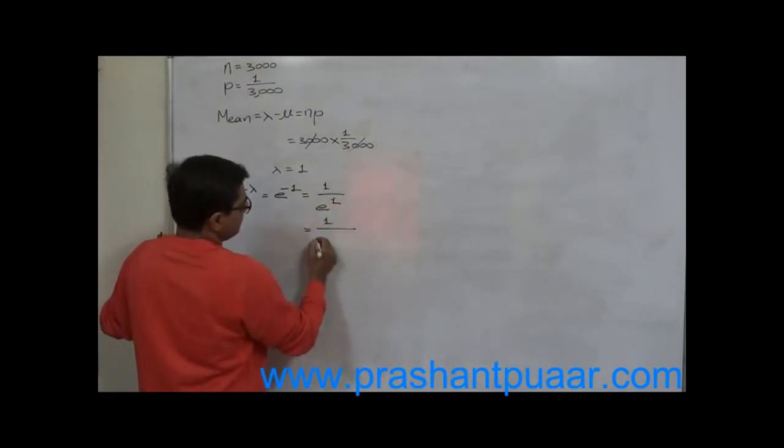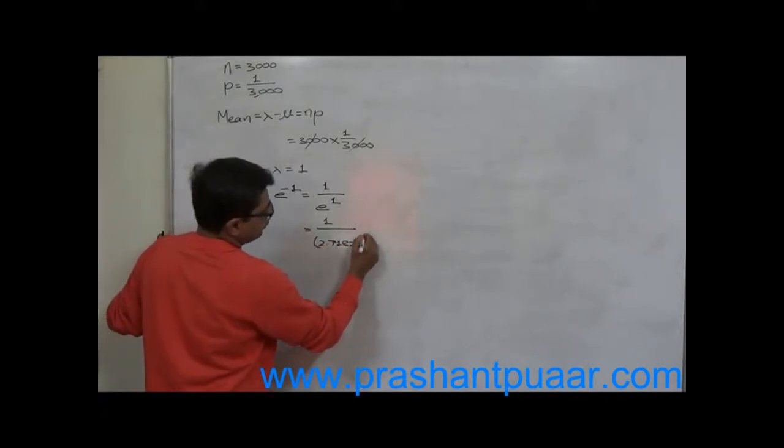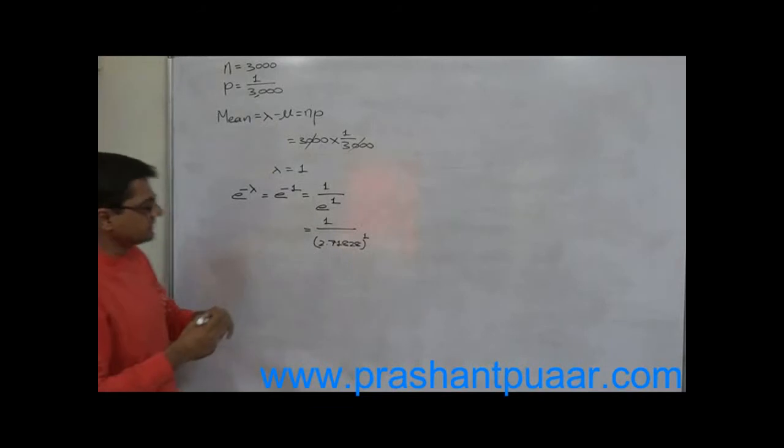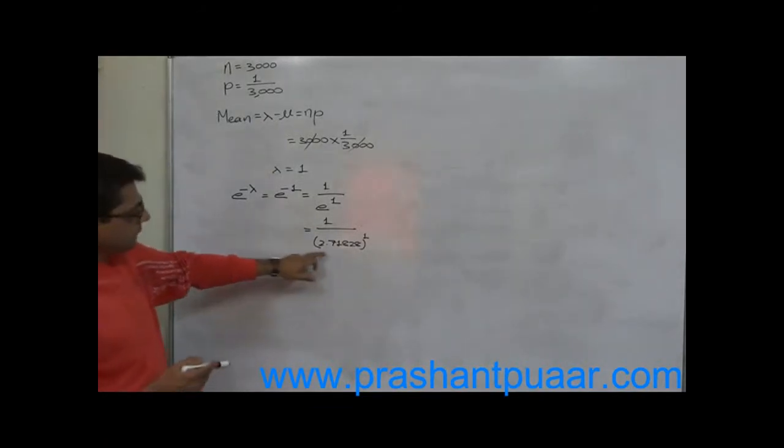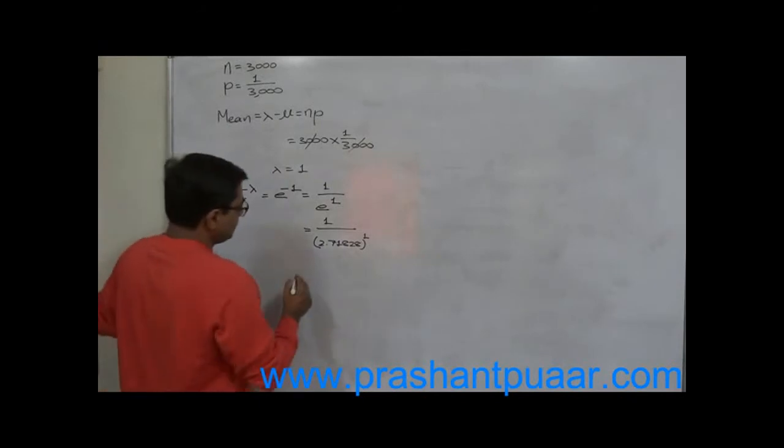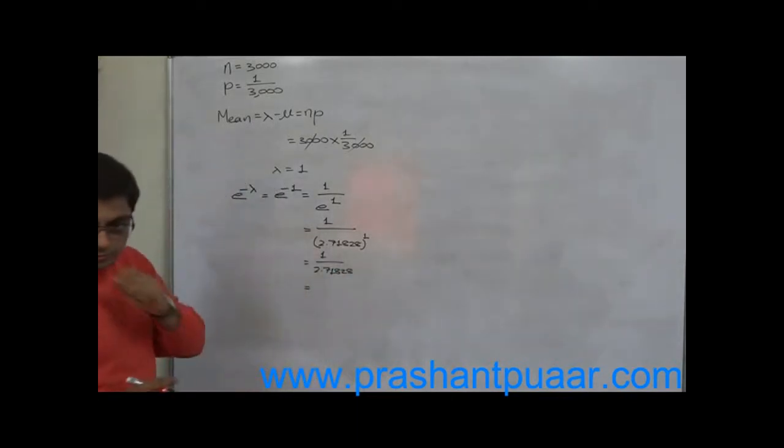That is the constant value of e, because e is the base of natural logarithm and its constant value is 2.71828. So ultimately it is 1 by 2.71828. You can calculate the value in this way too.